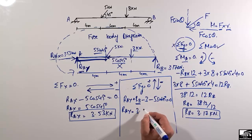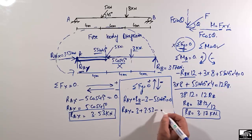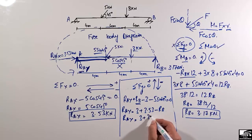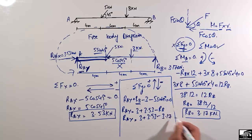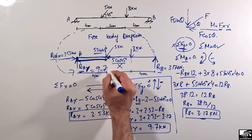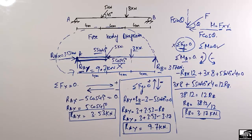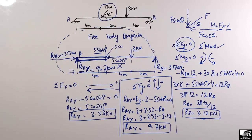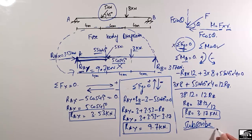Substituting RB = 3.17 kilonewton: RAy = 3 + 5·sin(45°) − 3.17 = 3.53 + 3 − 3.17 = 9.7 kilonewton. So RAy = 9.7 kilonewton. This is how to find support reactions when there is an inclined load acting on a beam. Hope you understood — don't forget to subscribe for daily civil engineering videos. Thank you for watching.